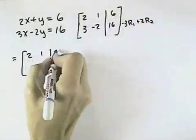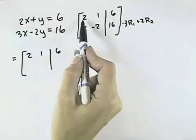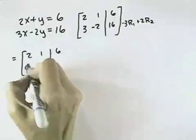So we have 2, 1, 6, and then we'd have, in this case, negative 3 times 2 is negative 6 plus 2 times 3 is 6, so that's 0.